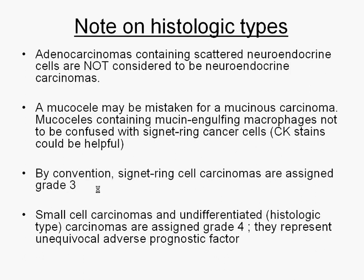One important point emphasized in the checklist is that when you see scattered areas of neuroendocrine cells in an adenocarcinoma — especially poorly differentiated ones — that would not qualify as a neuroendocrine carcinoma; it would still be adenocarcinoma and must be graded as such. One needs to be careful not to misclassify mucus with macrophages and goblet mucin as signet ring cells, because calling it signet ring means you are talking about a high-grade, at least grade three, adenocarcinoma. Any time you use small cell carcinoma, you are going to check the undifferentiated point of the grading.